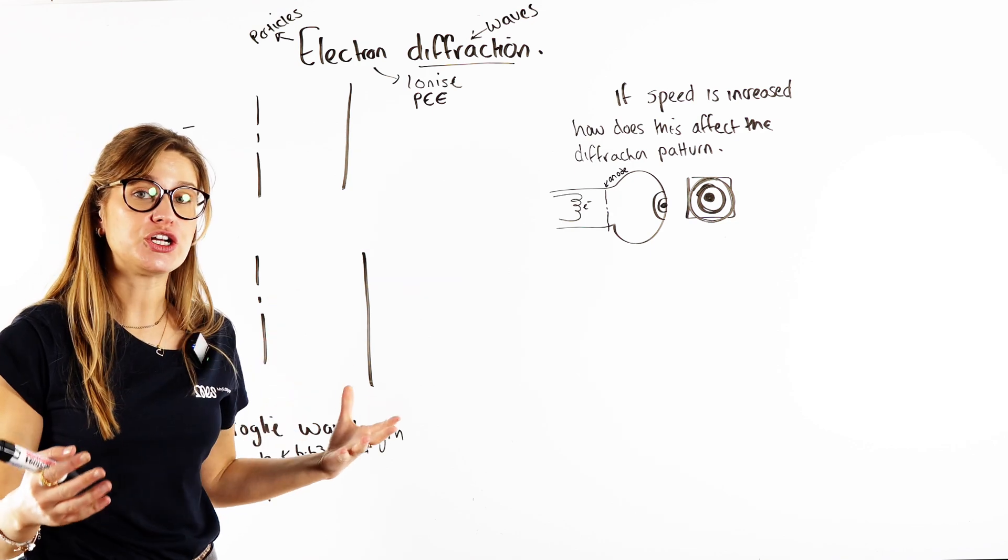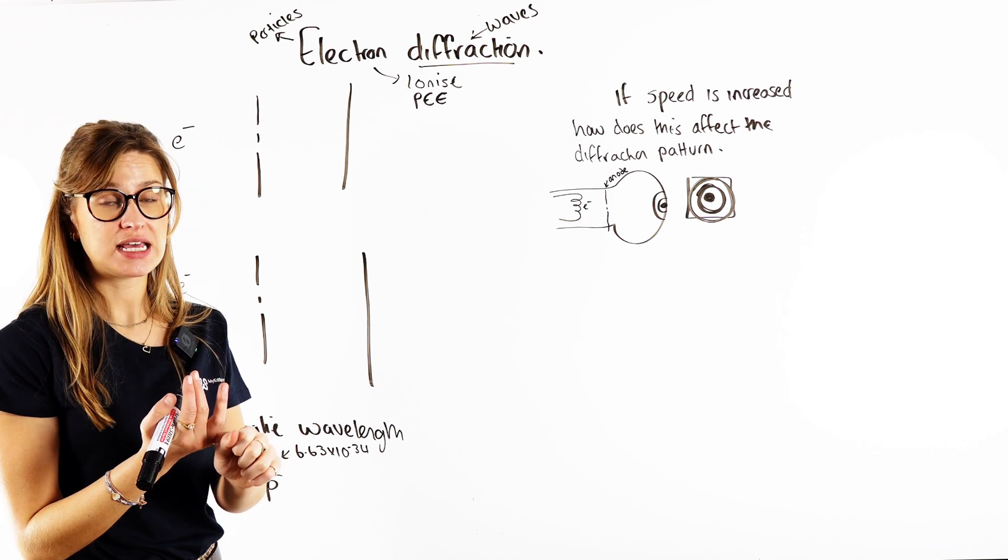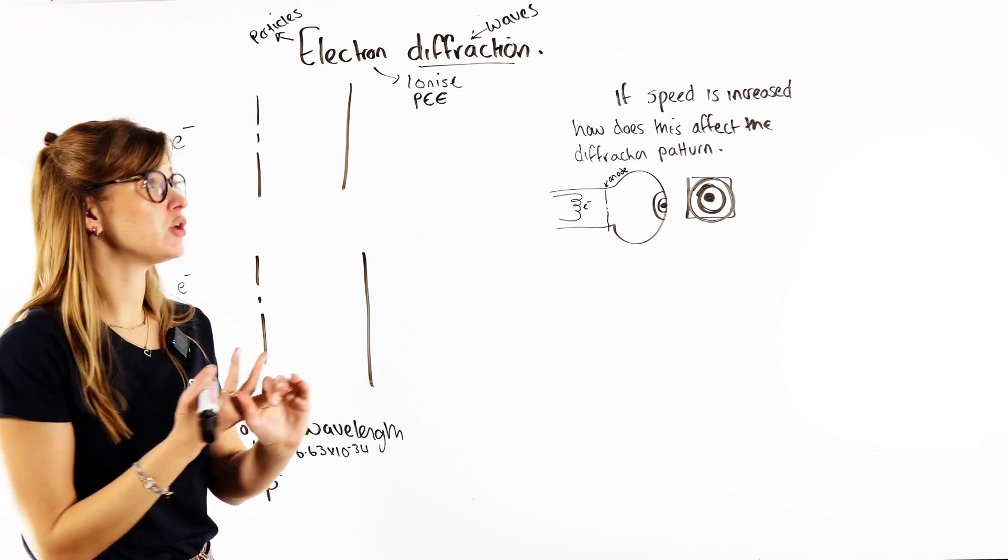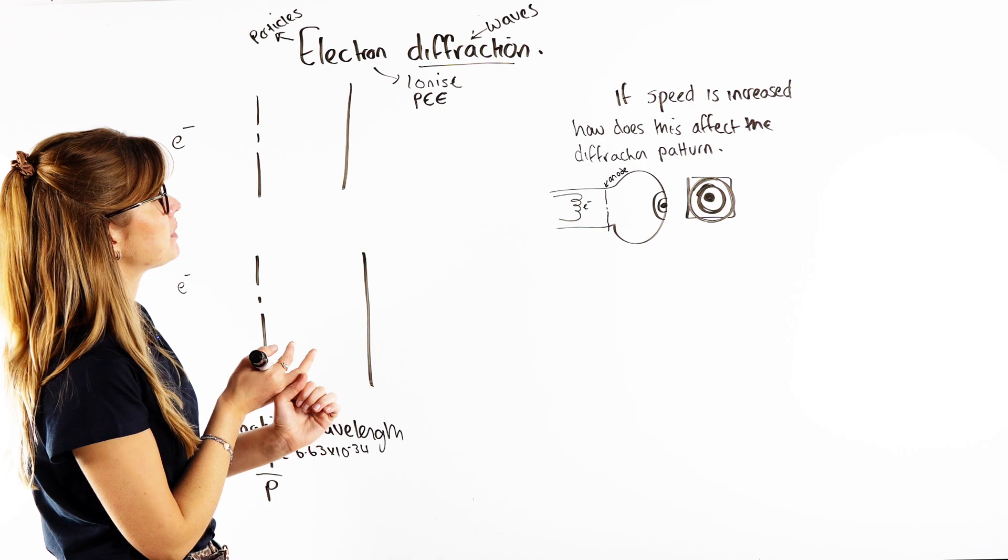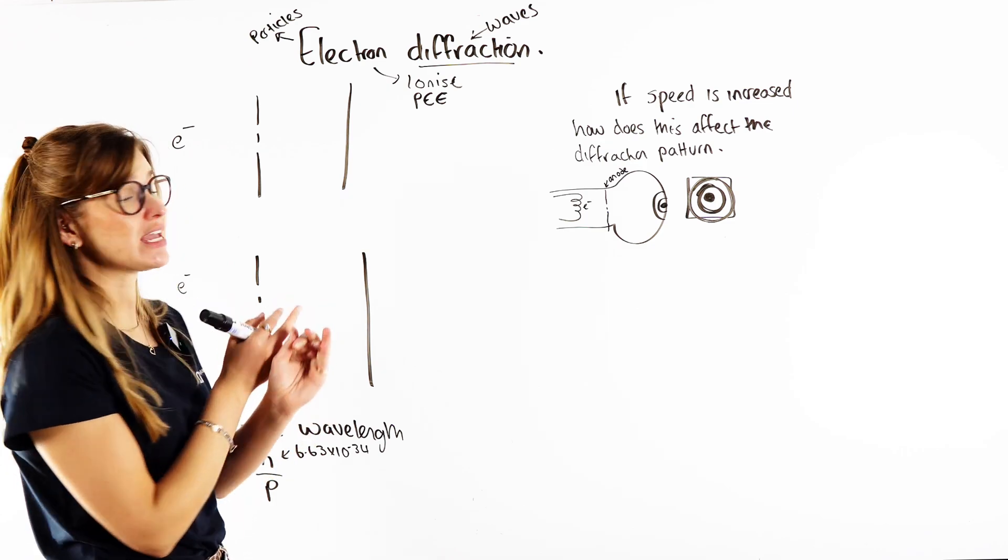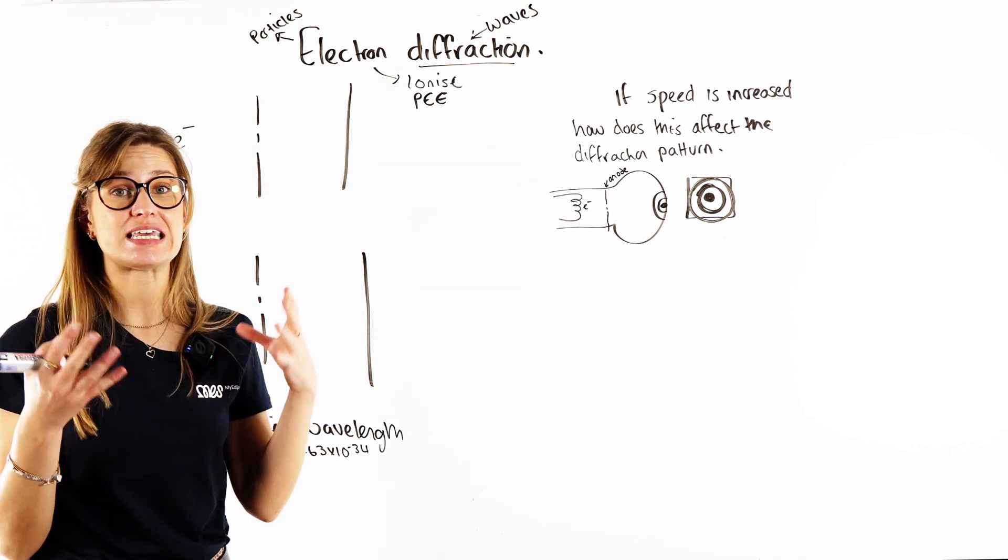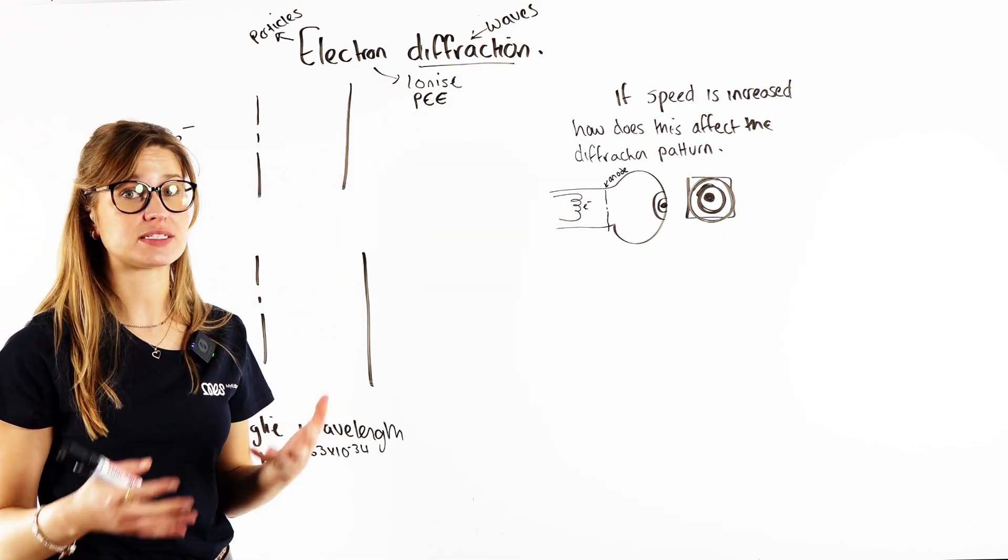Remember what we saw earlier was that we know that light rays, light waves, can be both waves because we know they diffract, and they can be particles. We know, again, they can be particles. We know that because of that photoelectric effect, that one-to-one interaction. So if waves, light rays can be both waves and particles, we also know electrons, we would probably see, can electrons also be waves and particles? And they can be.